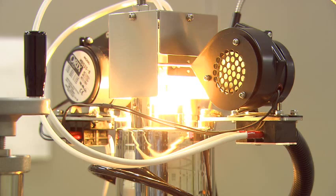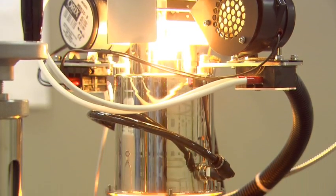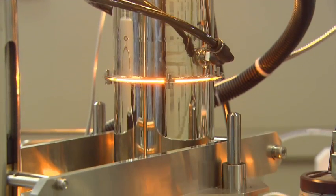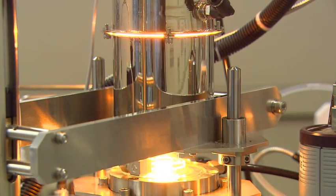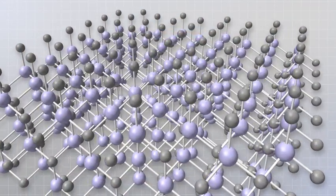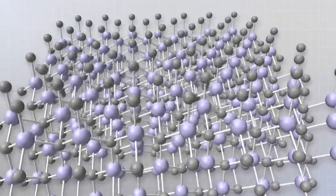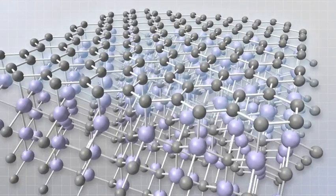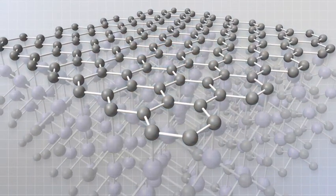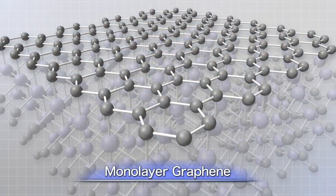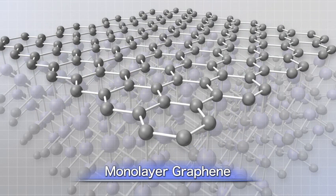Silicon carbide is heated in a furnace filled with argon. This causes the silicon atoms on the crystal surface to evaporate. As a result, the carbon atoms remaining on the crystal surface spontaneously form monolayer graphene.